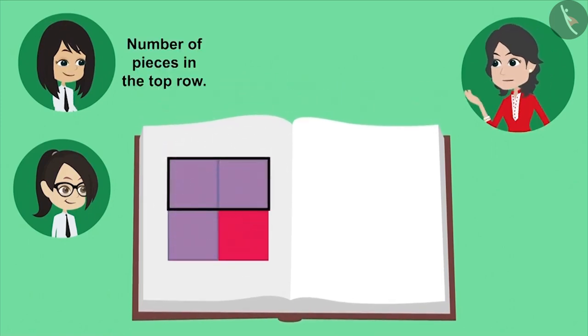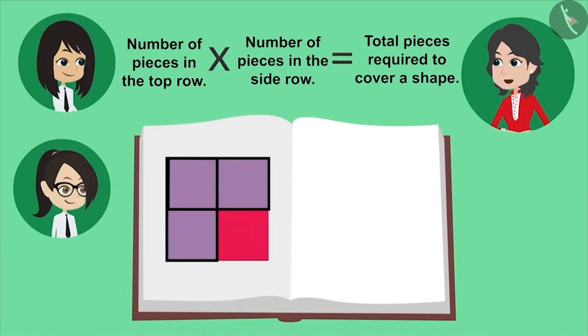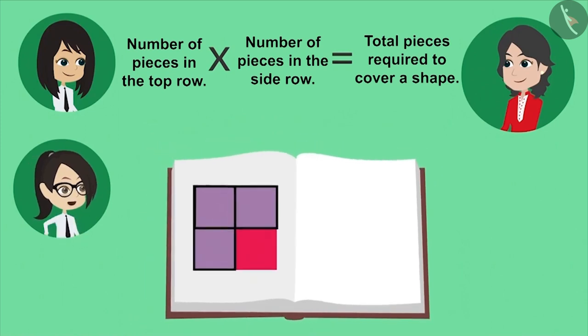You both are right. Now, we will multiply the number of pieces placed in the top row by the number of pieces placed in the side row. This will tell us how many pieces will be required to cover this shape. That means, to know how many pieces will be required to cover this shape, we have to multiply two by two. Am I right?